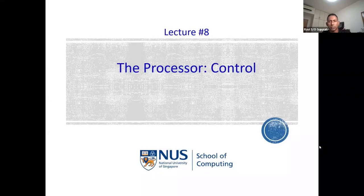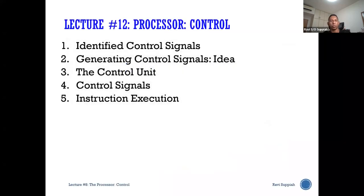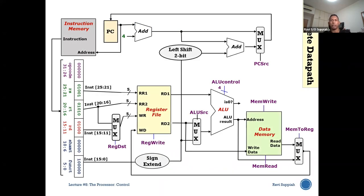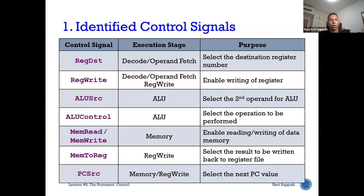The control block is responsible for managing how data flows through the processor. With so many things happening concurrently, the control block ensures data is channeled in the correct pathway at each stage. Here are all the control signals: register destination, register write, ALU source, ALU control, mem write, memory read, PC source, and mem to register. Let's look at each signal step by step.